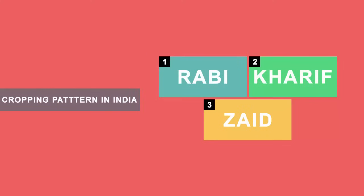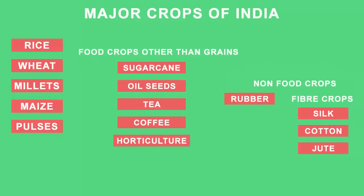With this we are now aware of the three types of cropping patterns in India. Now let's read about the major crops of India. A variety of food is grown in different parts of the country, depending on variation of soil, climate and cultivation practices. Some of the major crops in India are rice, wheat, millets, pulses, tea, coffee, sugarcane, oilseeds, cotton and jute.